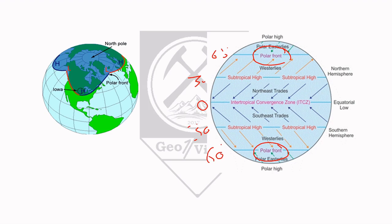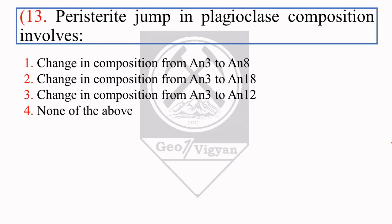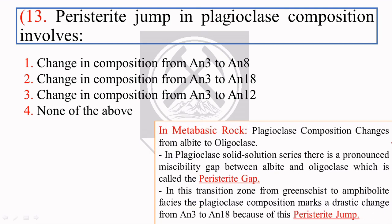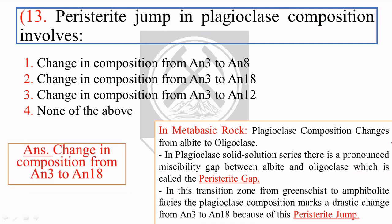The next question: the peristerite jump in plagioclase composition involves what? This question is from metamorphic facies and occurs in the greenschist-amphibolite transition facies. In metabasic rocks, plagioclase composition changes from albite to oligoclase. In the plagioclase solid solution series there is a pronounced miscibility gap between albite and oligoclase called the peristerite gap. In this transition zone, the plagioclase composition marks a change from An3 to An18. So the right answer is option 2.